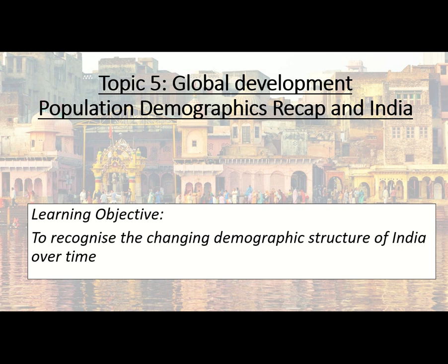Countries that are more developed have a slightly straighter-sided shape because there is very little death until you get towards later ages of 60 plus. That gives it more of a honeycomb or rectangular shape, associated with developed countries. Birth rates are lower due to education of women and contraception. Death rates are also lower because of better healthcare, access to contraception, and better education — all things that happen as a country develops.